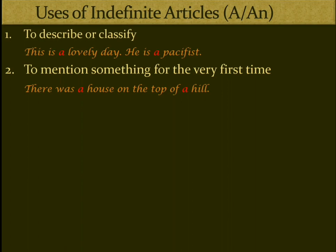For example: 'There was a house on the top of a hill.' Here 'house' and 'hill' are mentioned for the first time. If we continue the story and refer to the same house again, we say 'the house', because now both the speaker and listener know which house is being referred to — it has become particular, so we use the definite article 'the' the second time.